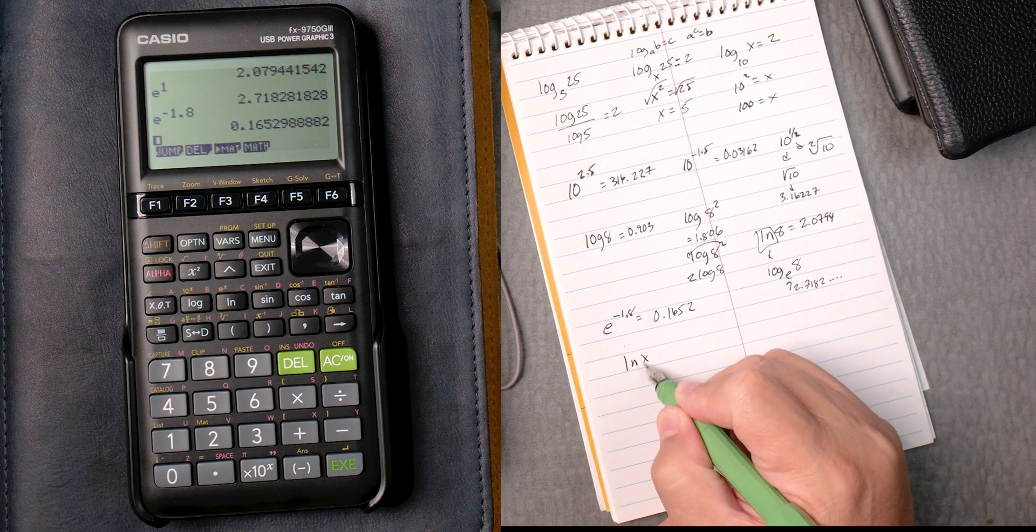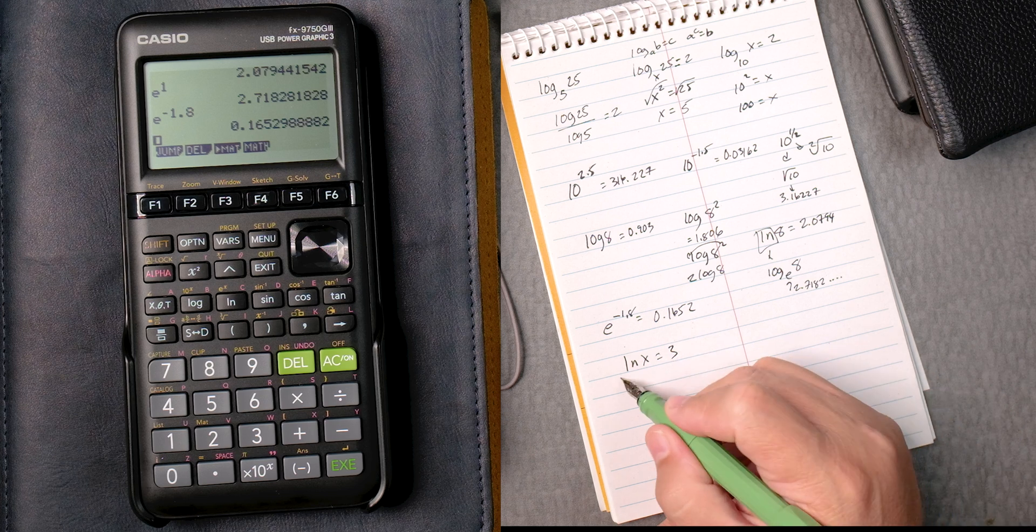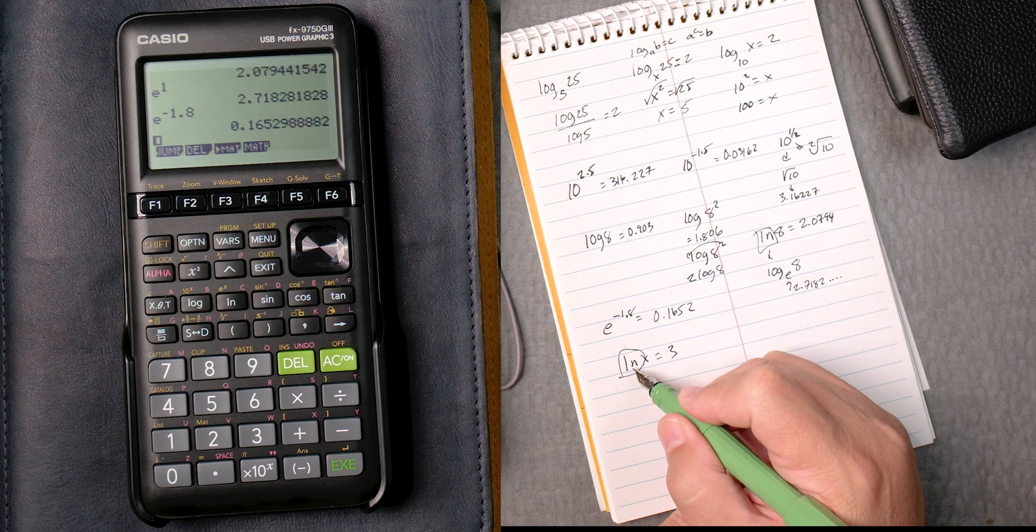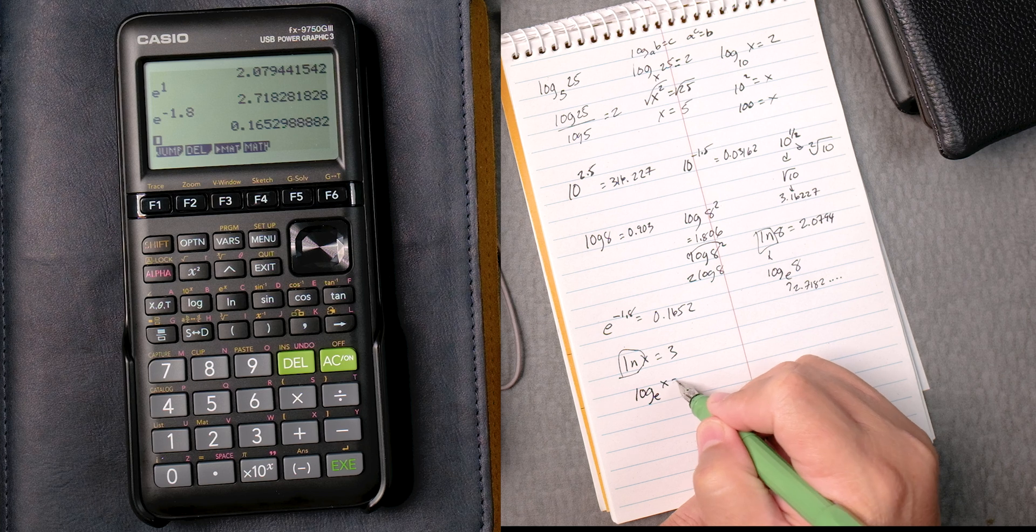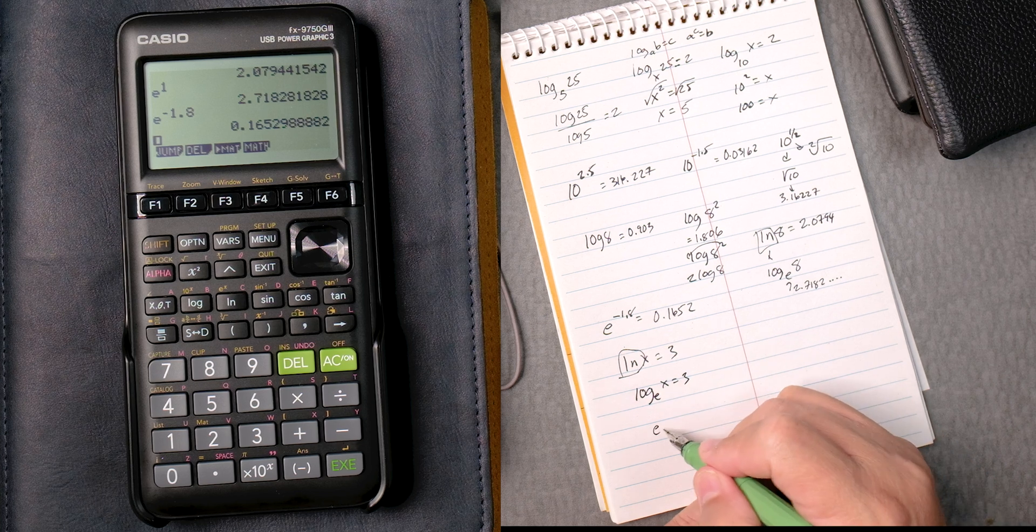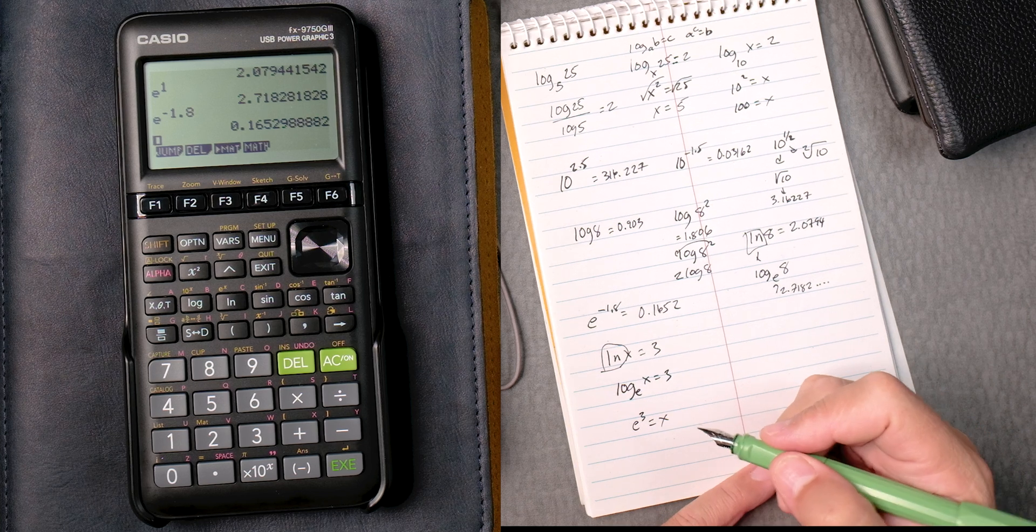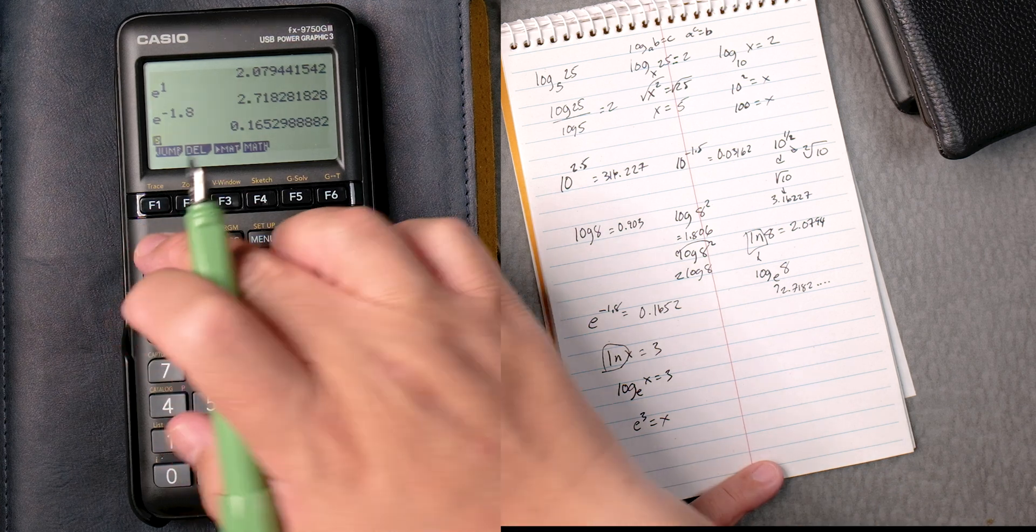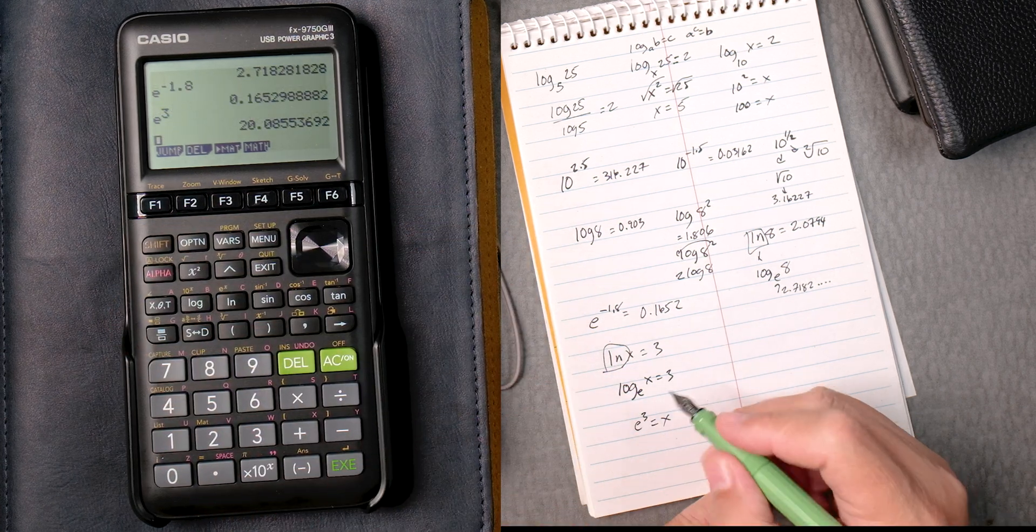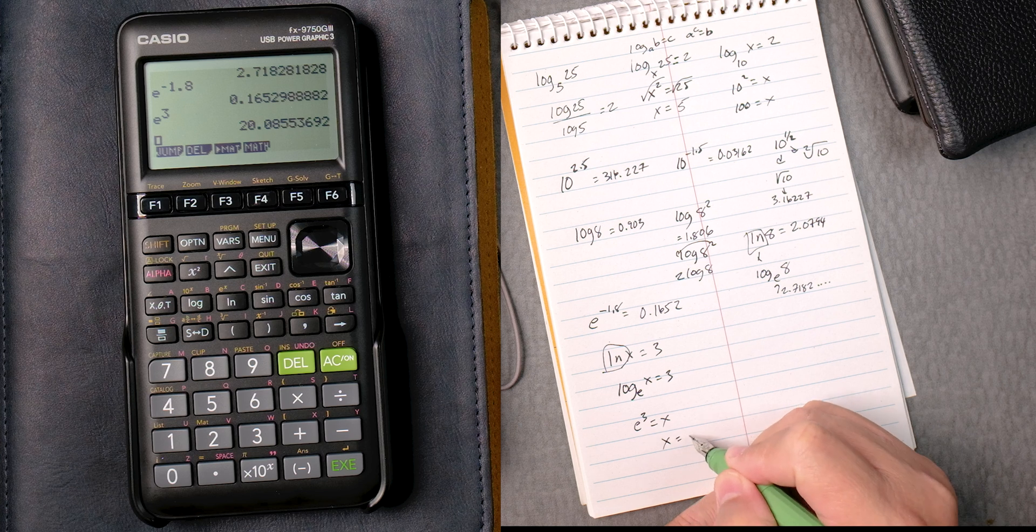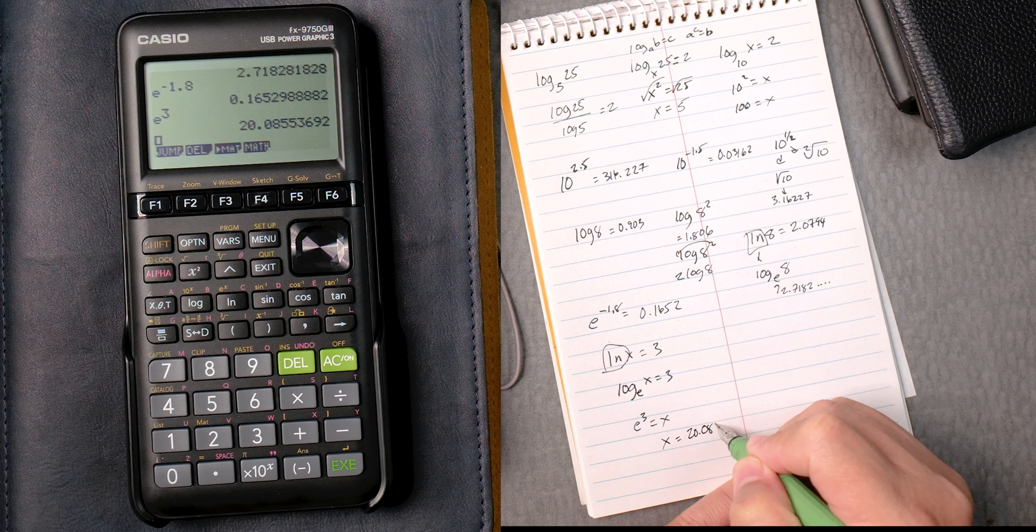What about the natural log of x equals 3? Remember, the natural log is log of e, x equals 3. So e to the third equals x. So shift, e to the x, 3, execute, and we get 20.0855.